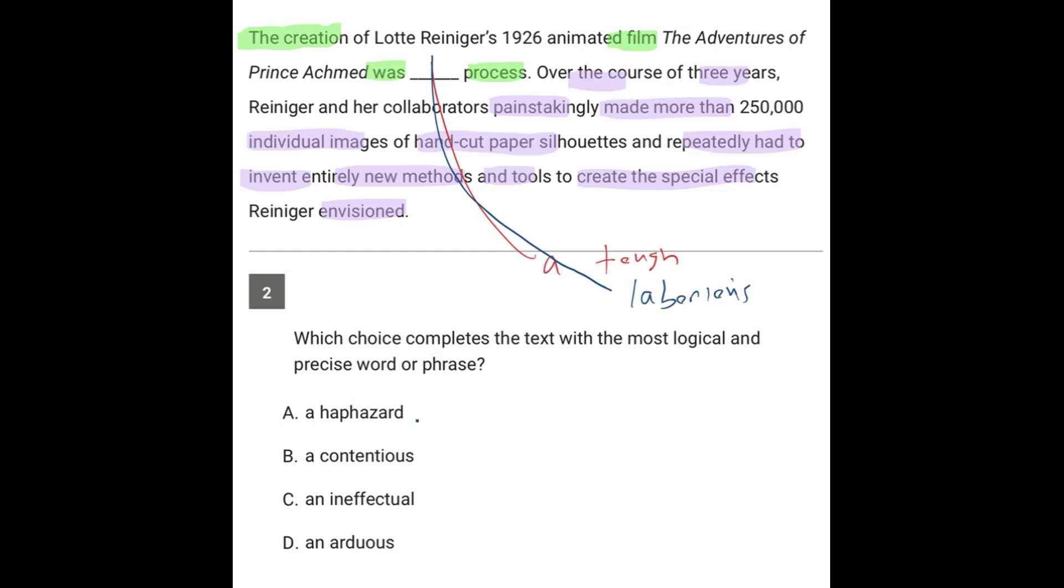So let's look at the answers. Haphazard means crazy, wild, all over the place. Contentious means kind of a stressful issue, a contentious issue, something that people highly disagreed about.